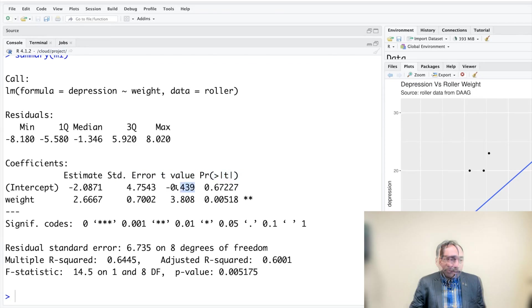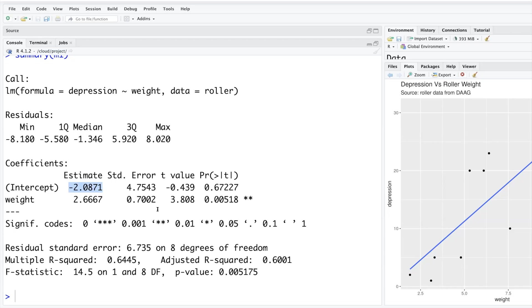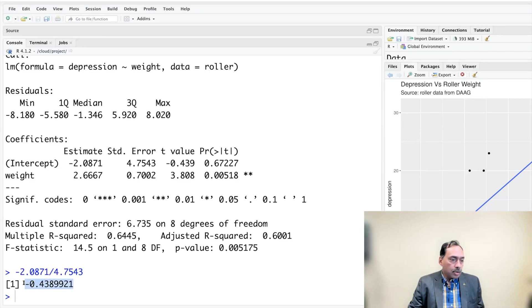These numbers like standard error and t-value are basically summarized in the form of a p-value that you see in the last column. The t-value, for example, is simply estimate divided by the error. So if you take this intercept and divide that by the error term, you get negative 0.4389. The coefficient estimate divided by standard error is approximated using t-distribution.